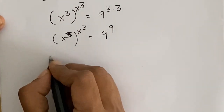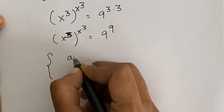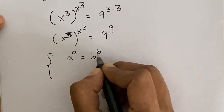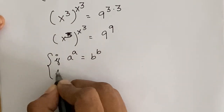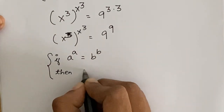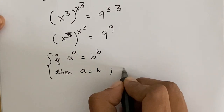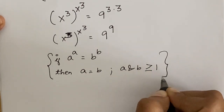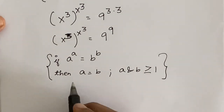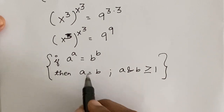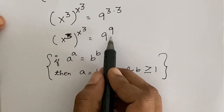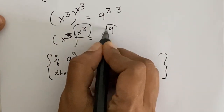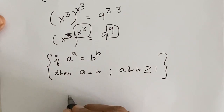We know that if a to the power a equals b to the power b, then a equals b, where a and b are greater than or equal to 1. The above expression is in the form a to the power a equals b to the power b, so we apply this rule and get x cubed equals 9.